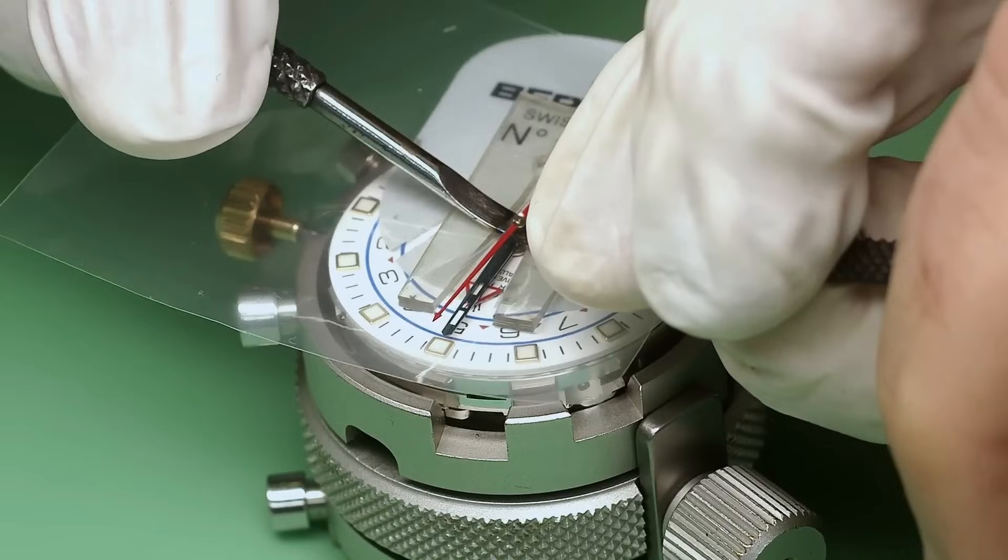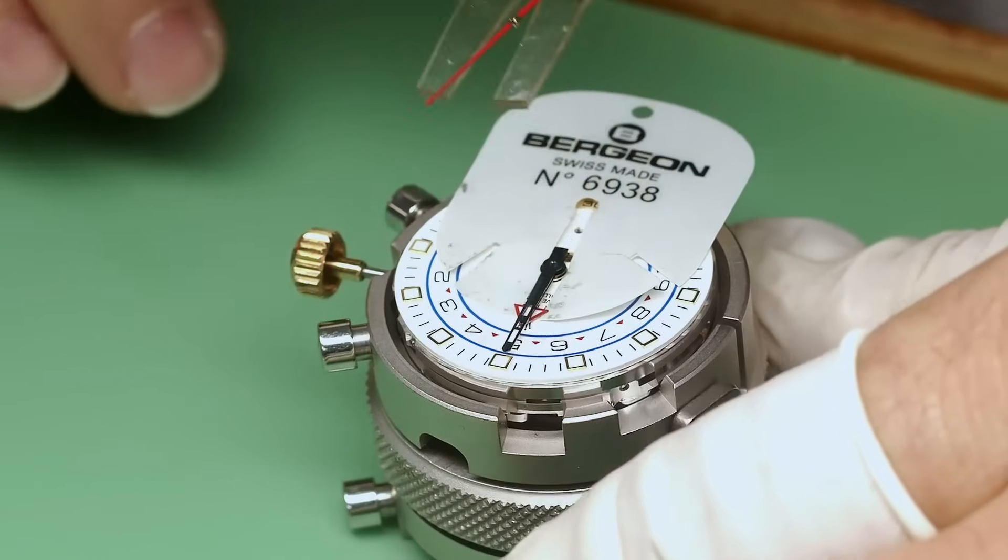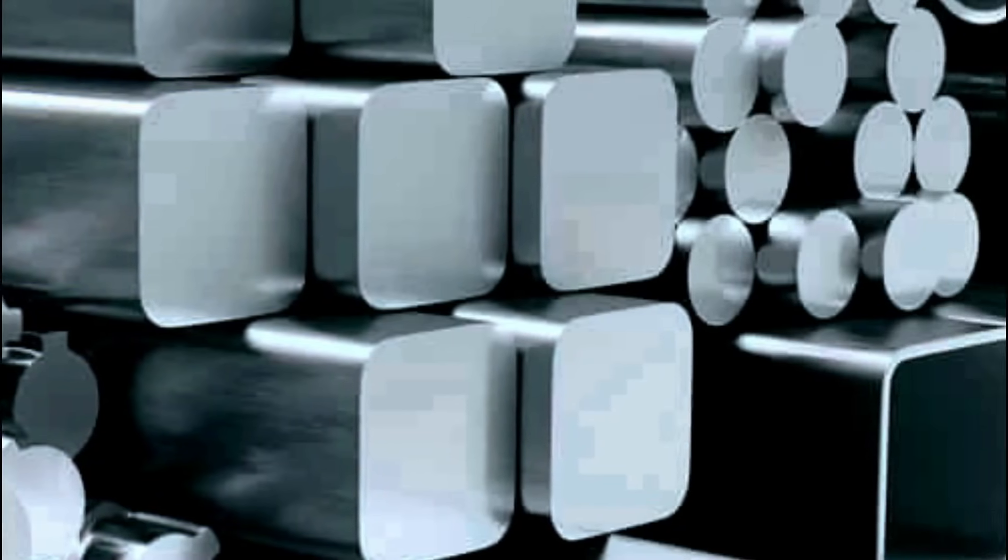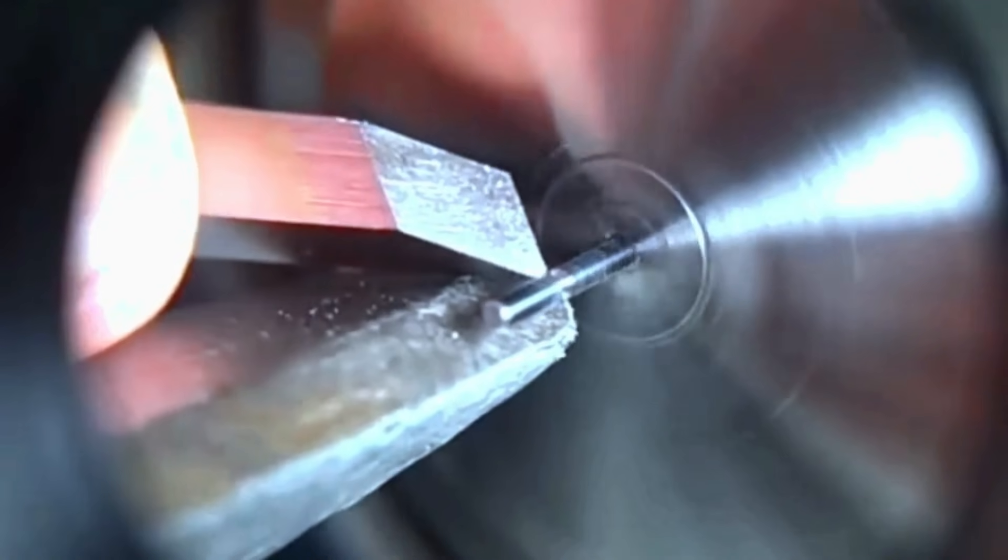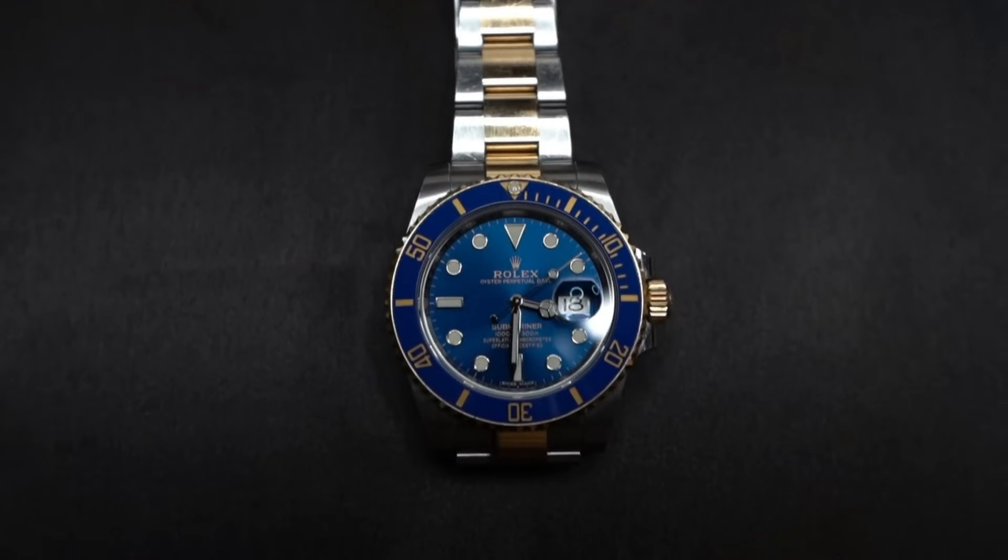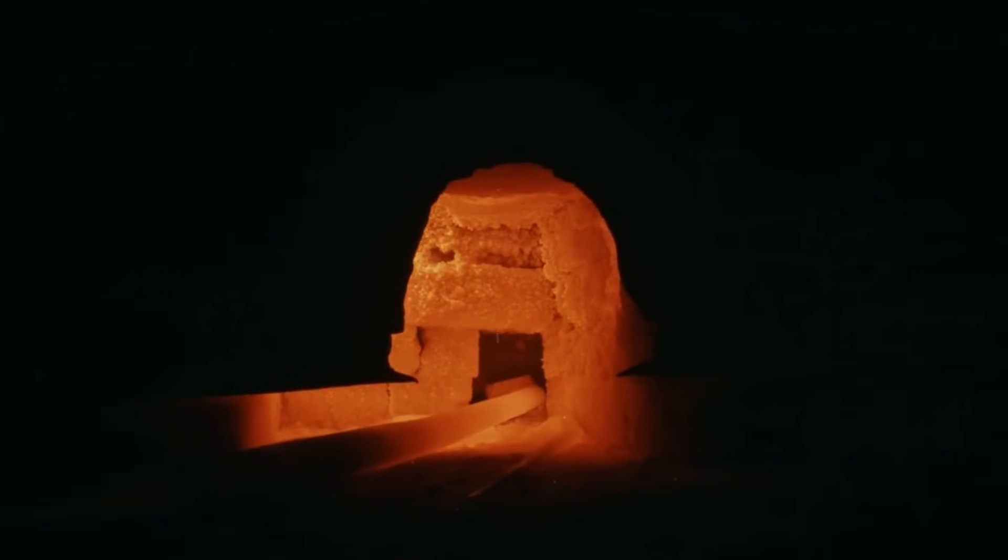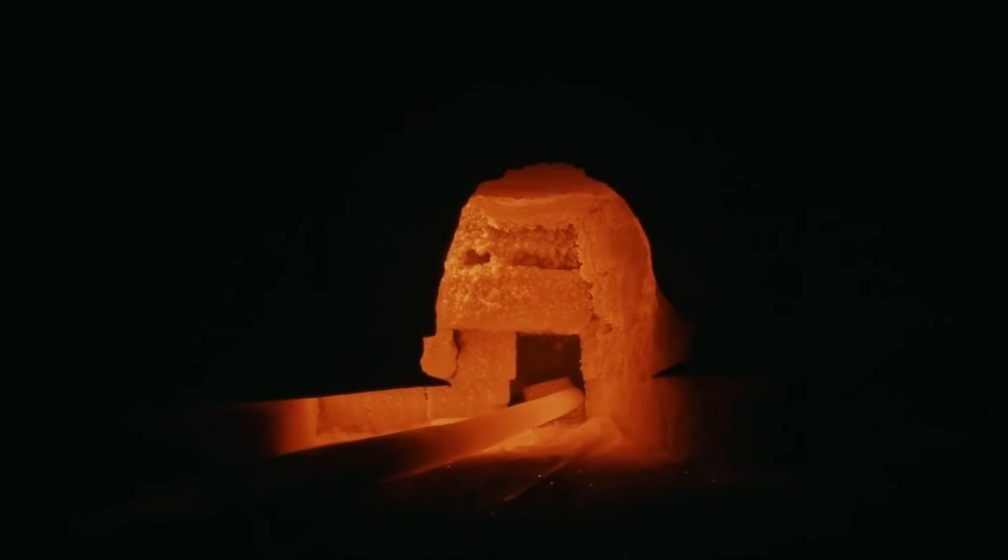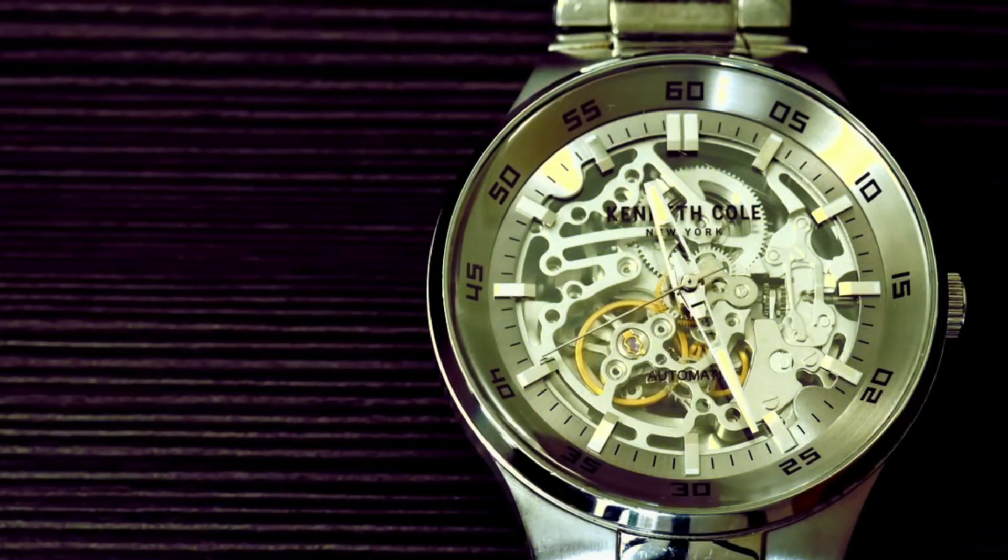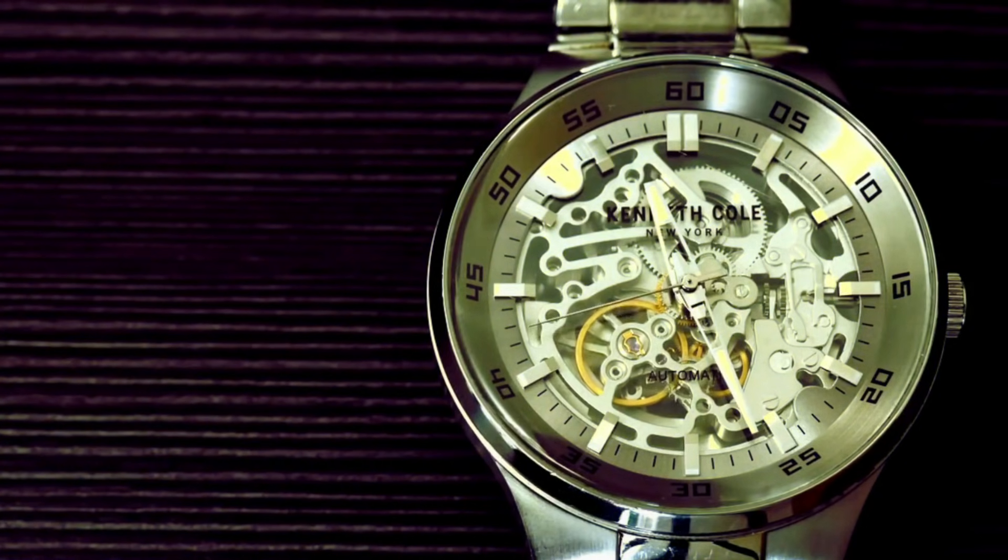You might think gold is the star of a Rolex, but there's an unsung hero in every watch. It's called Oystersteel, a special type of stainless steel that few other watchmakers use. This alloy is the backbone of Rolex's famous durability. Oystersteel is tougher and fights off rust better than regular stainless steel, making it perfect for watches that need to last. But these qualities also make it hard to work with. Rolex had to create special machines and tools just to shape and polish this stubborn metal.